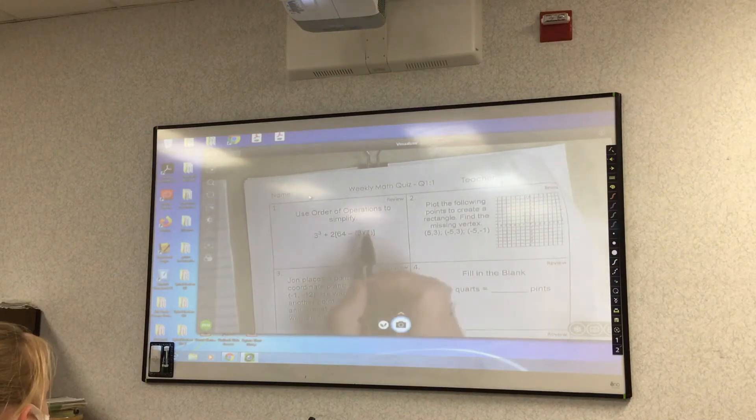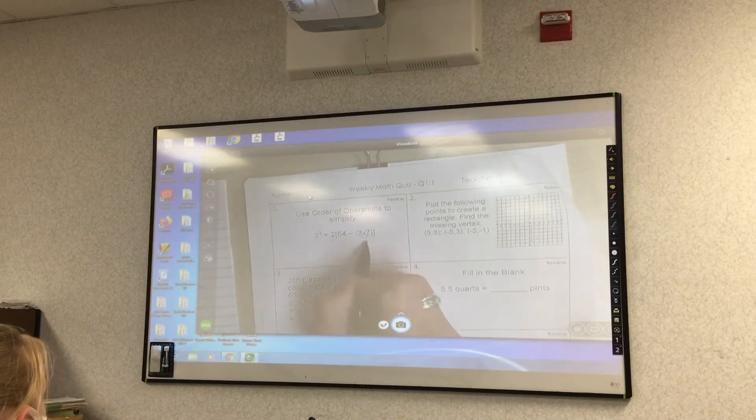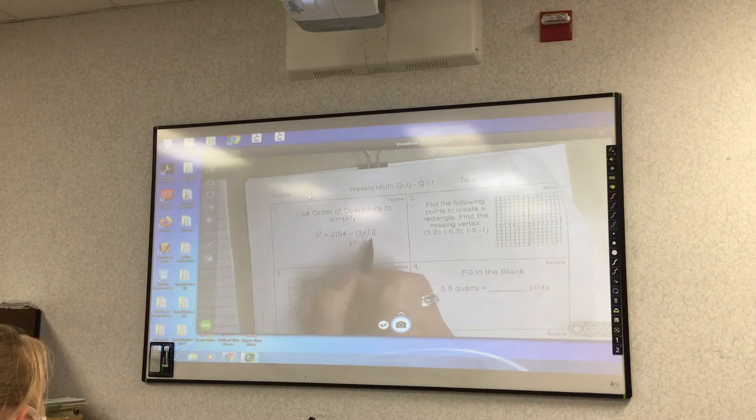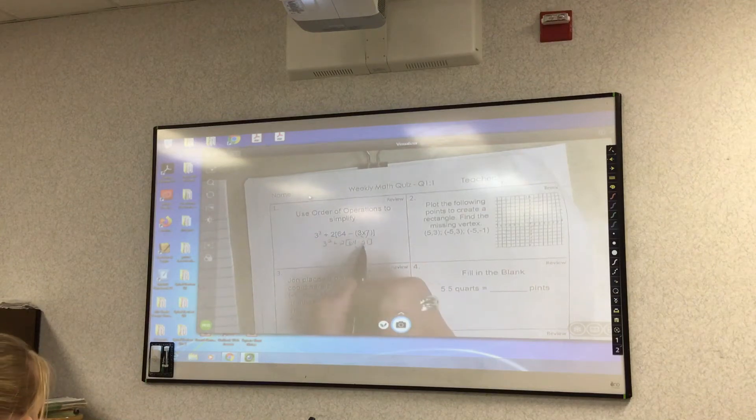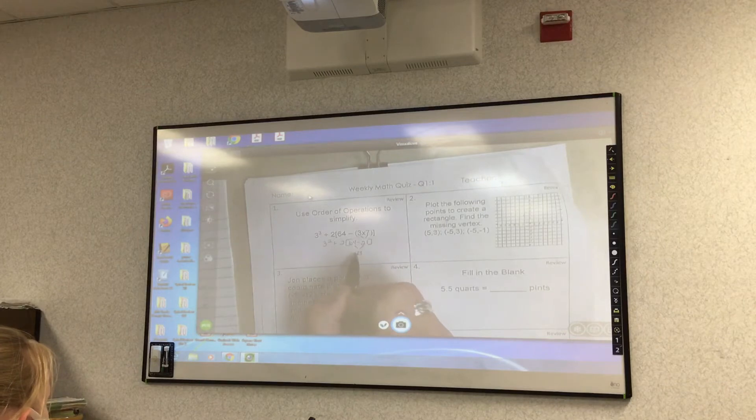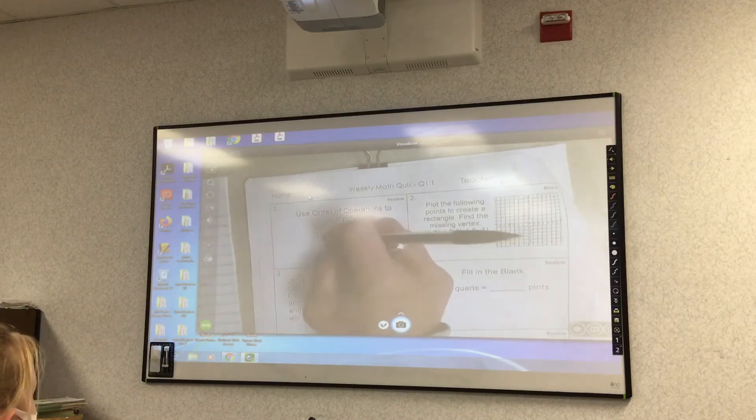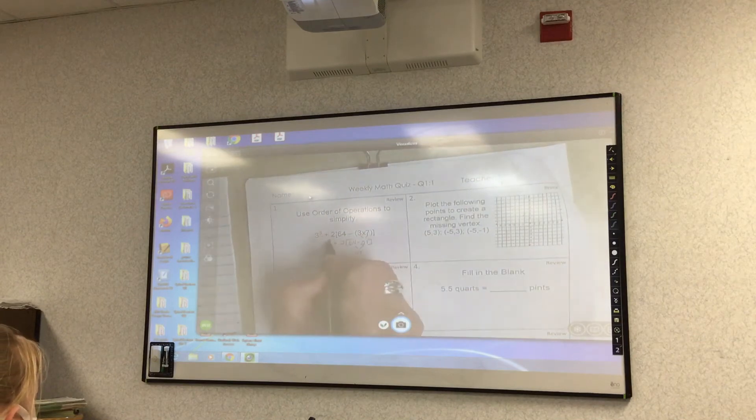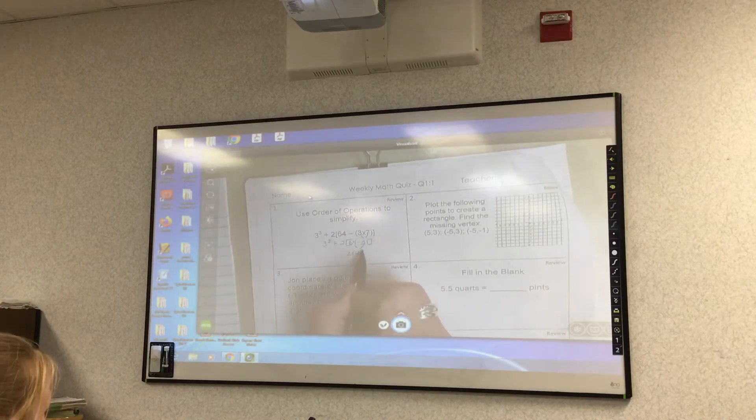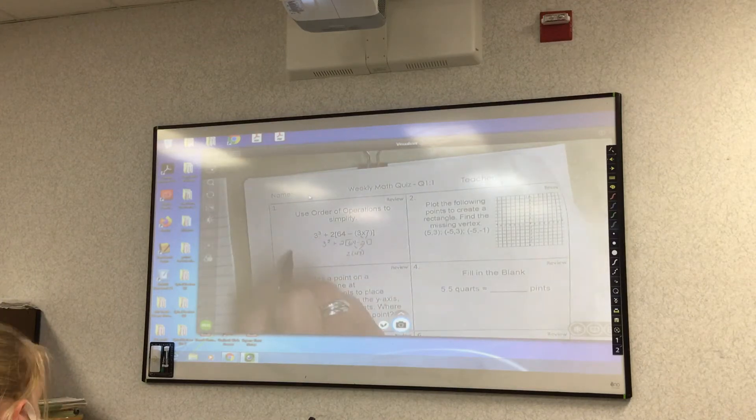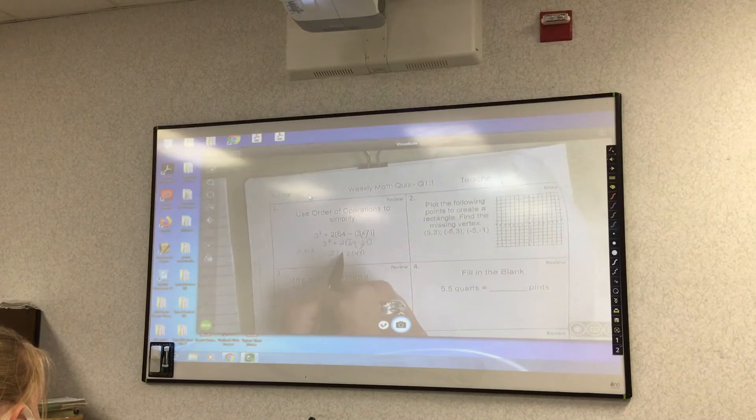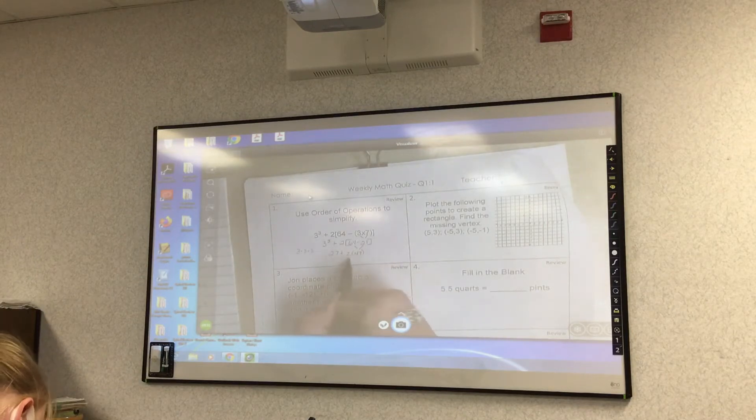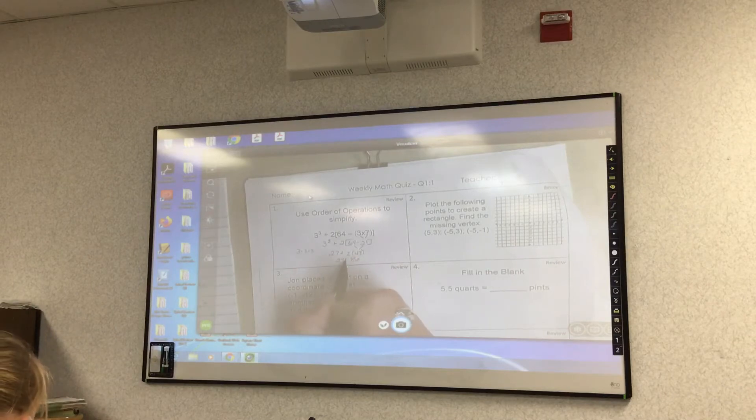To follow the order of operations, we do three times seven, which is 21, and then I bring down the 64 minus 21. Then that's three squared plus this. Then 64 minus 21 is 43. So two times 43, and then three cubed is like saying three times three times three. Three times three is nine, nine times three is 27. So I'm going to bring down the 27 plus two times 43. Two times 43 is 86. So 27 plus 86 is 113.